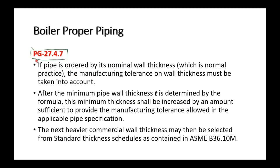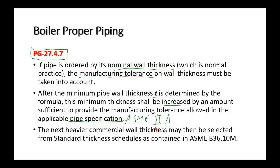PG-27.4.7 discusses nominal wall thickness: after calculating t using the formula, the minimum thickness must be increased by an amount sufficient to provide for the manufacturing tolerance allowed in the applicable pipe specification. You'd go to ASME 2A to find that tolerance — typically plus or minus 12.5% for most pipe. Then, after determining the increased thickness, select the next heavier commercial wall thickness.